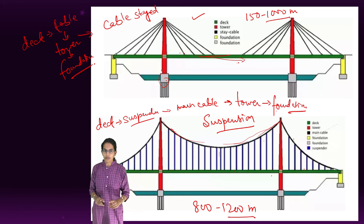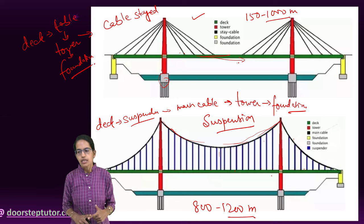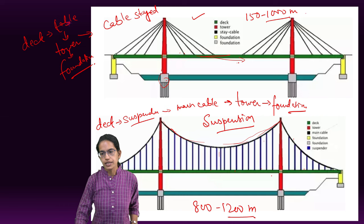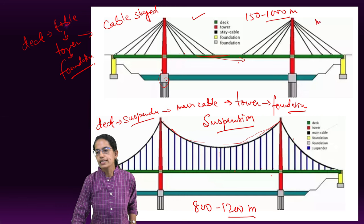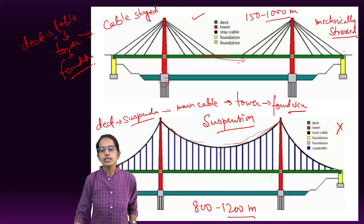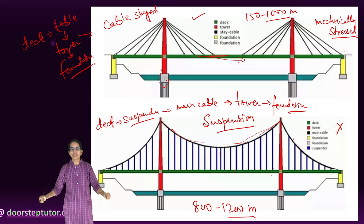Another important difference between a cable-stayed bridge and a suspension bridge is that the cables in the cable-stayed bridge are mechanically stressed. So these are mechanically stressed or pre-stressed. However, in the case of suspension bridge, they are not mechanically stressed.